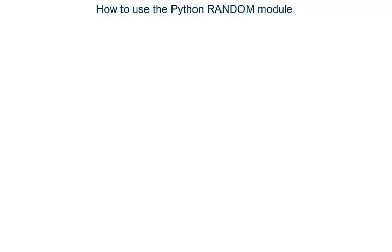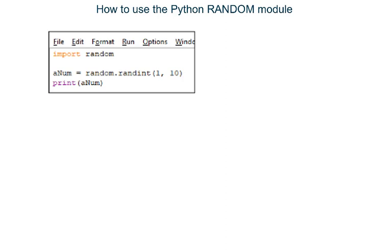How to use the Python Random Module. A Python module is a file that stores code that might be useful for other programmers to use in their own programs. We can import a module at the start of our own program and then make use of it elsewhere in our program. In this video we look at how to use a random module which has code in it that allows us to create random numbers inside our own program.